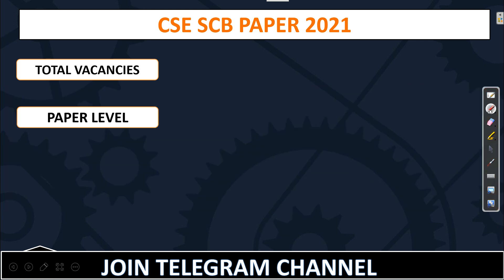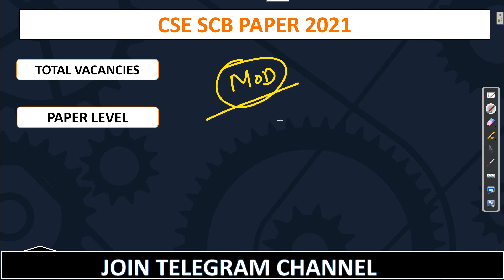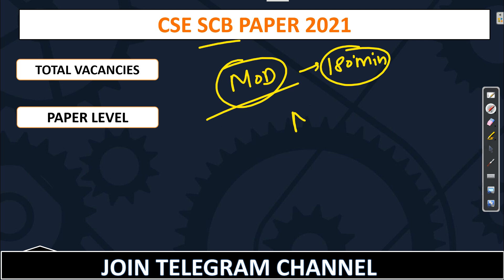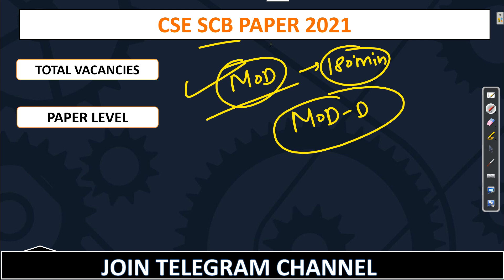About the paper level for CSE Scientist B: this year the paper was a little moderate, unlike last year when it was very easy. Theoretical concepts were there and the paper satisfied the Scientist B level. If you were able to solve that paper in 180 minutes, it was challenging, and most students found it challenging too. Students rated it moderate to a little difficult, but according to me it was a moderate paper.